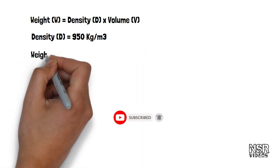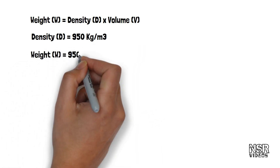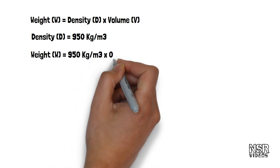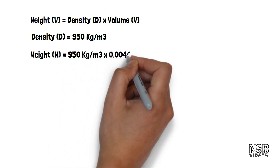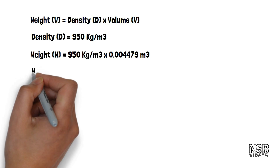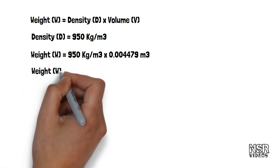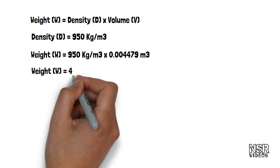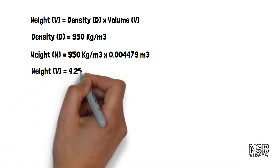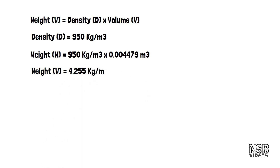We use an average density of 950 kg/m³. Multiplying by the volume of 0.004479 m³, the final weight is 4.255 kg per meter.